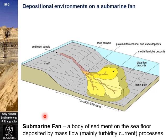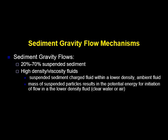This submarine fan is normally dominated by turbidites or turbidite deposits and can form several depositional lobes. To some extent, it is similar to an alluvial fan or a river-dominated delta in terms of form. This submarine fan shows the proximal, medial, and distal phases of a turbidite deposit.